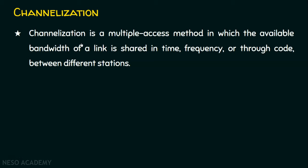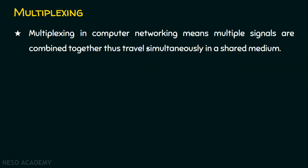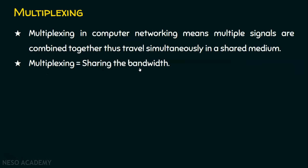Before going into frequency division multiple access, let's see what multiplexing is. Multiplexing in computer networking means multiple signals are combined together and travel simultaneously in a shared medium. If we have multiple signals, meaning multiple stations sending their signals on a common channel, we combine them together to make them travel simultaneously. Why do we need multiplexing? Simply for sharing the bandwidth — the entire capacity of the channel in terms of bandwidth is divided among multiple stations.